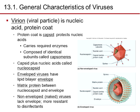A viron is a viral particle — nucleic acid with a protein coat. The protein coat is called the capsid. It protects the nucleic acid from the environment, mostly acids and other immune agents, and carries required enzymes. It's composed of identical subunits called capsomeres — a polymer of these proteins. The capsid plus the nucleic acid is called the nucleocapsid. Envelope viruses have a lipid bilayer envelope; non-envelope (naked) viruses lack the envelope and are more resistant to disinfectants.